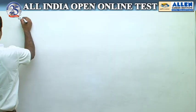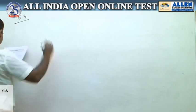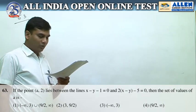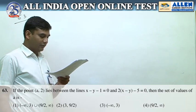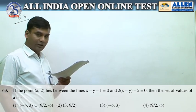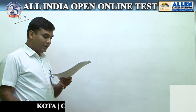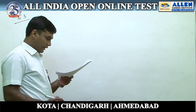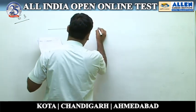Question number 63. If the point (A, 2) lies between the lines x minus y minus 1 equals 0 and 2 into x minus y minus 5 equals 0, then find the set of values of A. Two parallel lines are given.